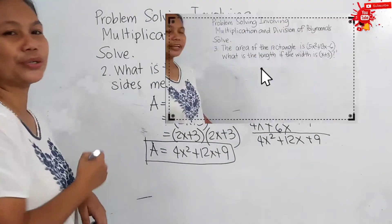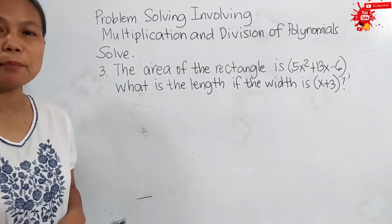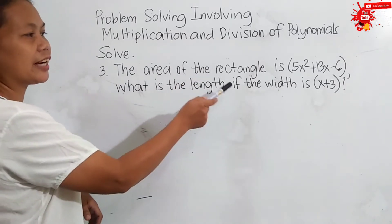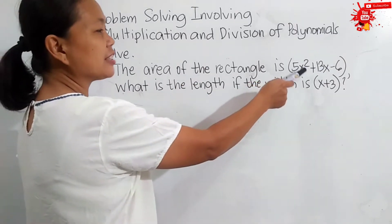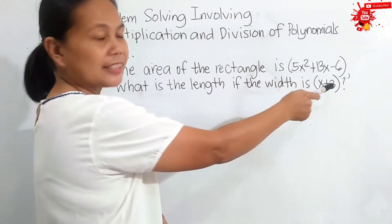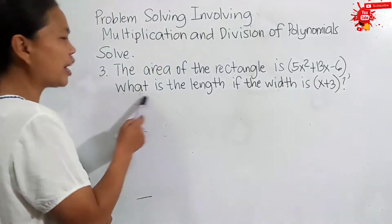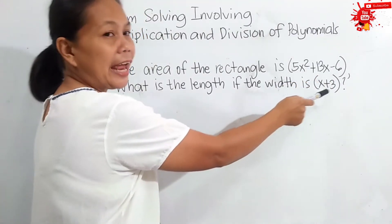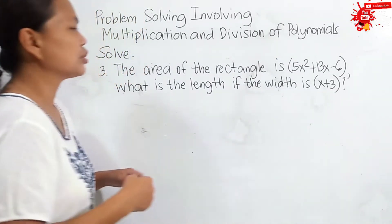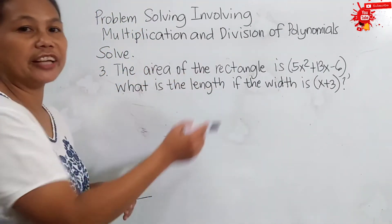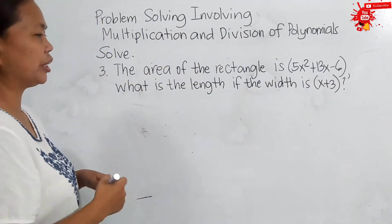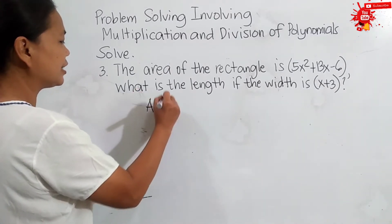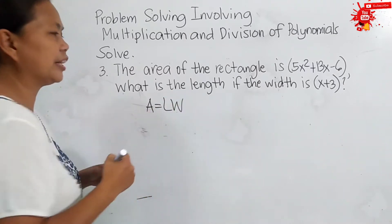Therefore, the area of the square whose sides measure 2x plus 3 is 4x squared plus 12x plus 9. This is our answer. Let us discuss example number 3. We have here the area of the rectangle is 5x squared plus 13x minus 6, and we need the formula for the area of the rectangle: A is equal to length times width.